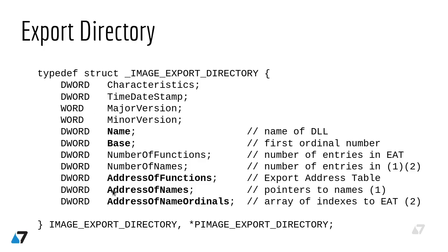First, there are three pointers to three arrays. The first array holds the RVAs of functions which are exported in the DLL — this is called the Export Address Table. The second array holds pointers to the names of the exported functions. The third array is called the array of indexes into the Export Address Table, but for now just remember it's an array of numbers. So: array of pointers, array of function names, and array of numbers.